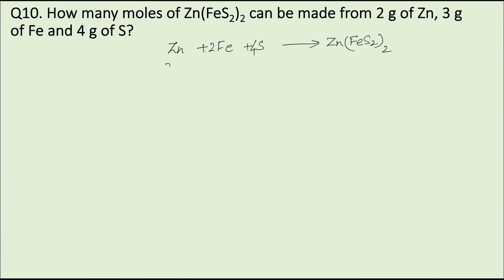Weight of Zn: 2 g. Weight of iron: 3 g. Weight of sulfur: 4 g. Now we calculate moles of each reactant and product.